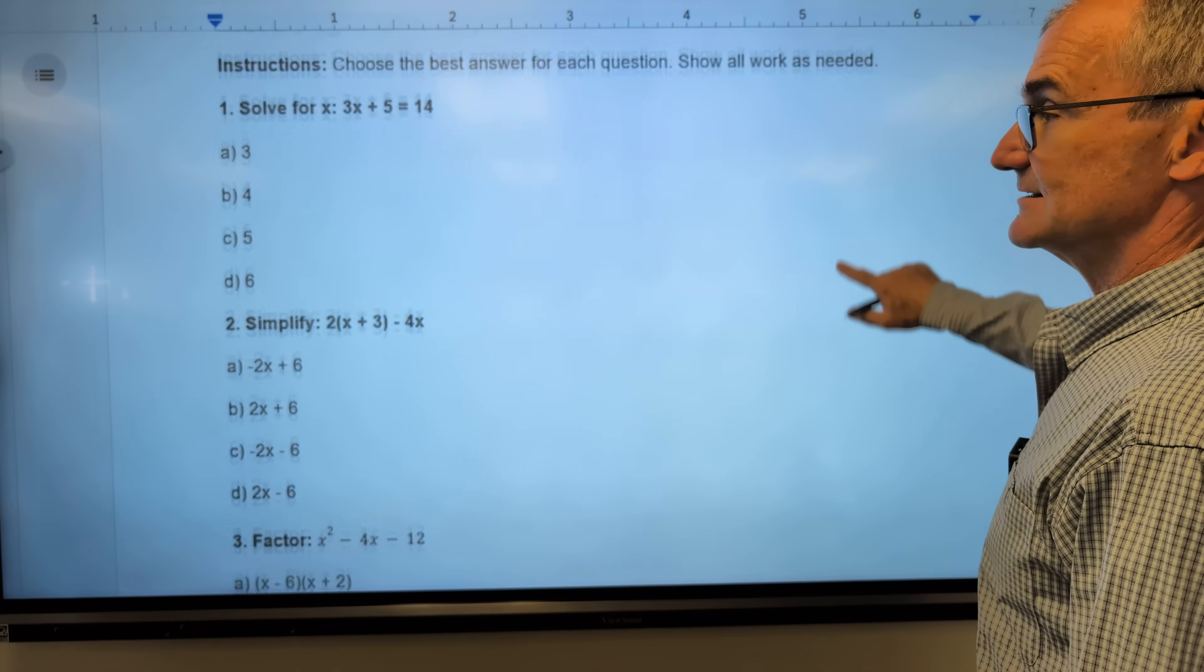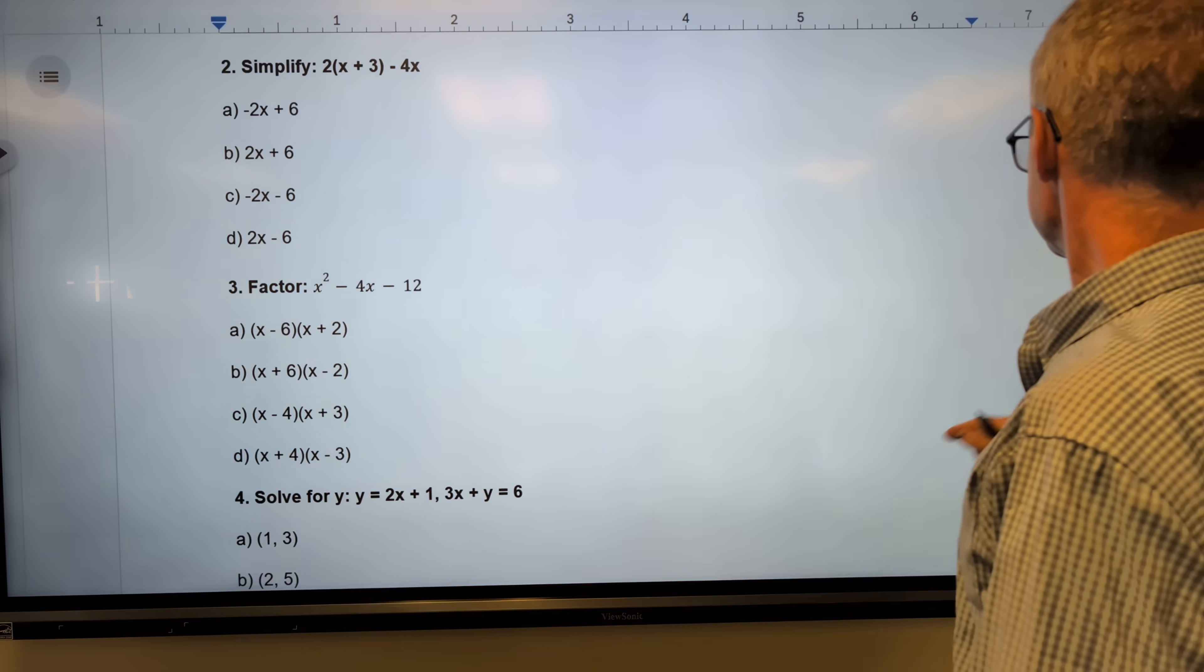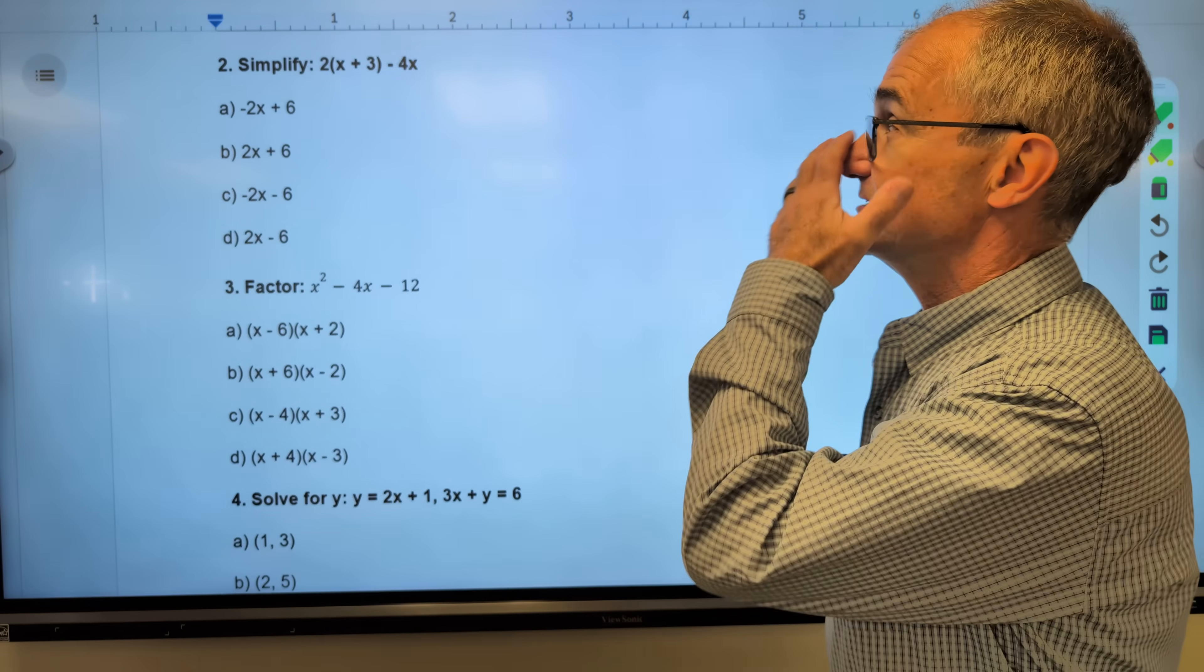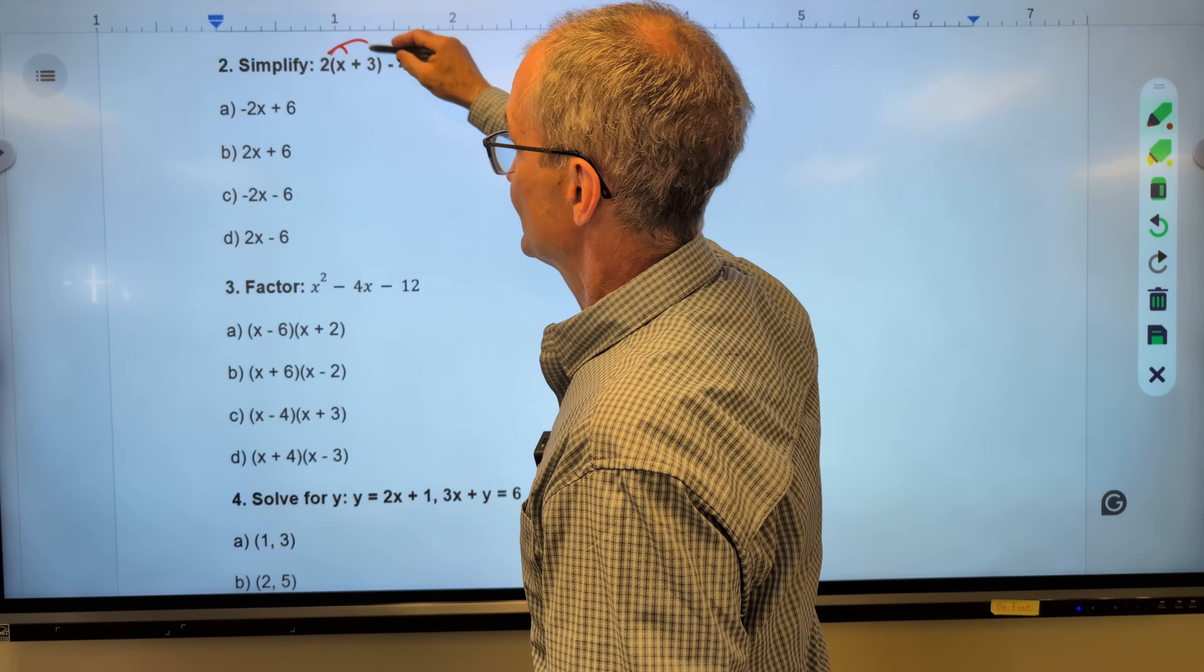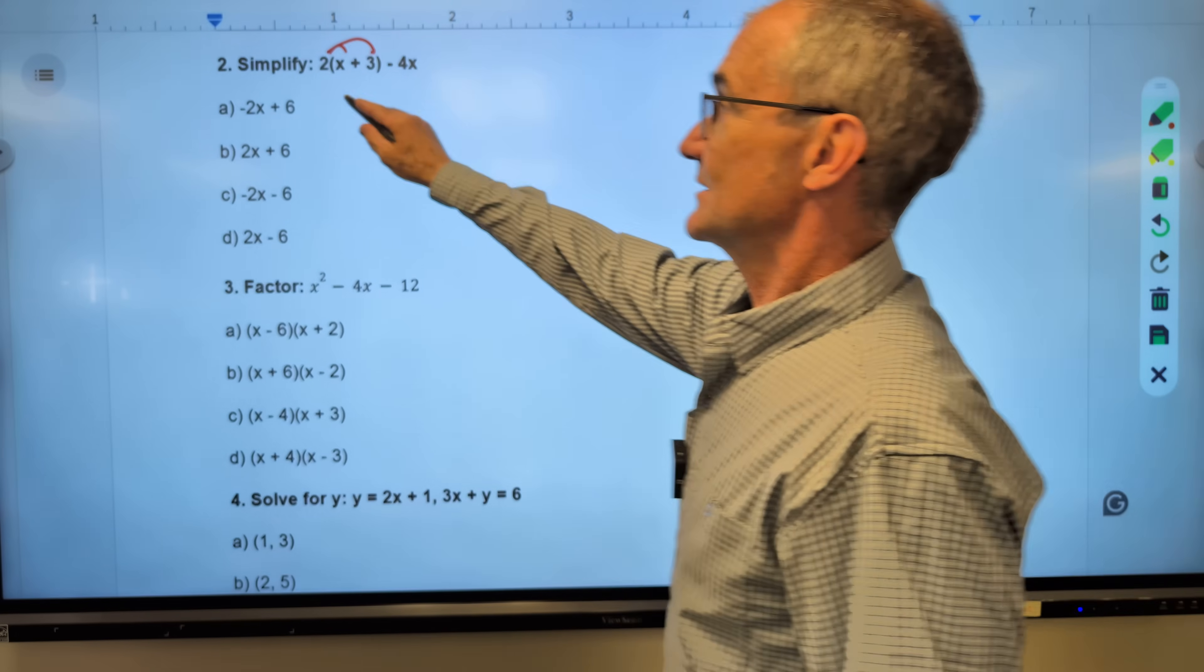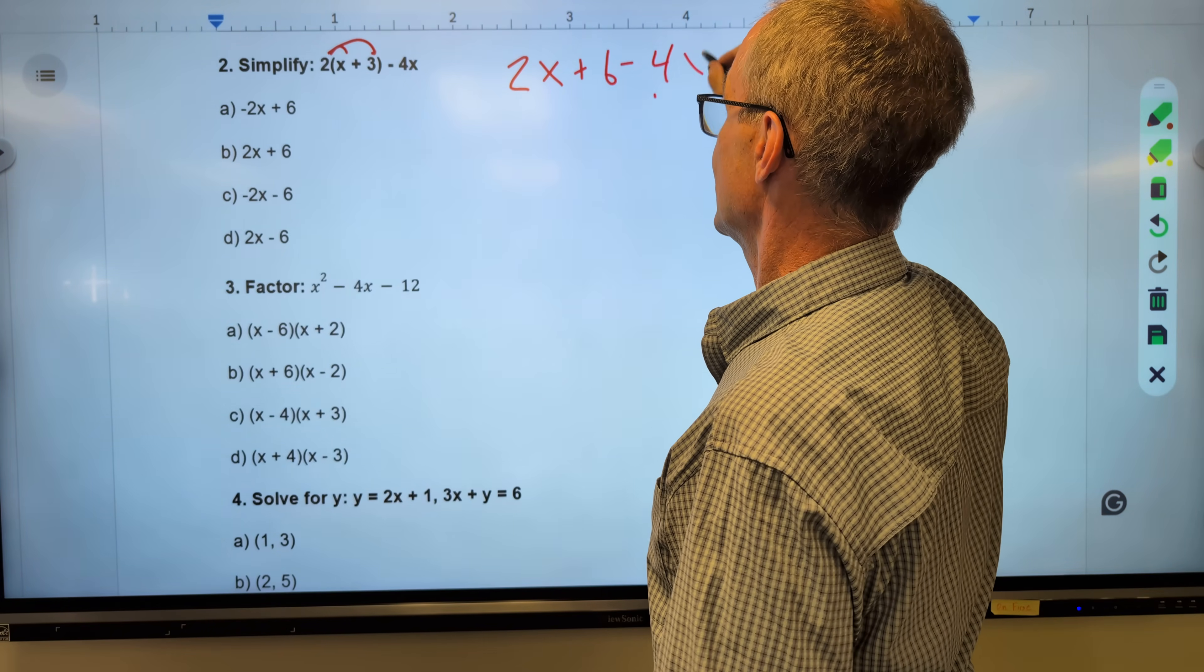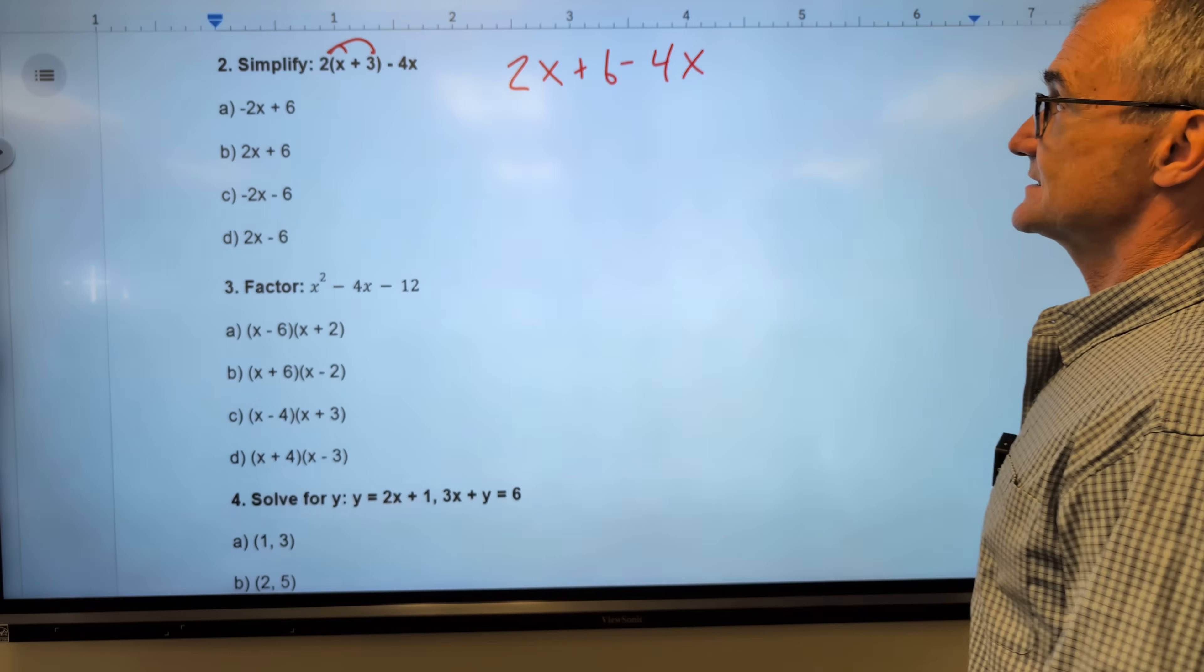So this is 2 times a quantity minus 4x. What I have to do here is distribute that 2 through the whole quantity. As I look at that problem, I can see that's kind of the trick. So I do 2 times x, so 2x, 2 times 3 minus 4x. Now that I have that, I need to combine all of my similar terms.